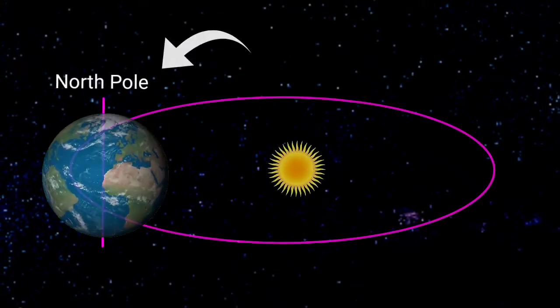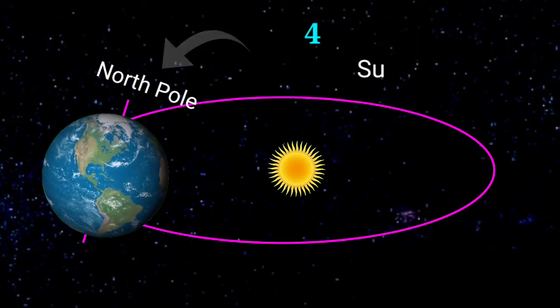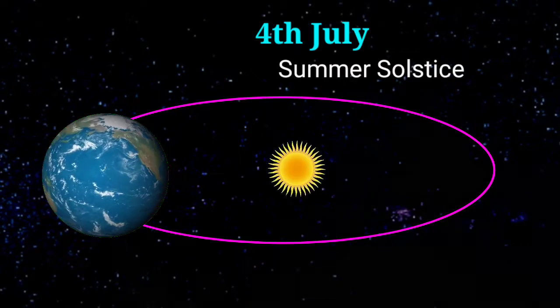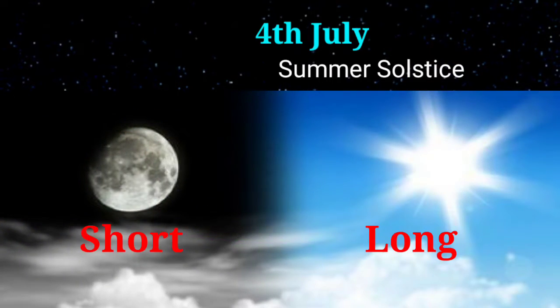due to maximum tilt of the north pole towards the sun on 4th July, it is known as summer solstice. During this time, the length of the day is longer than night.